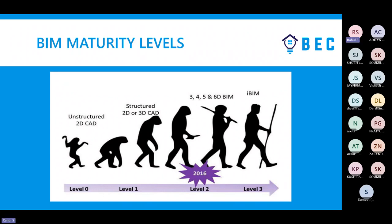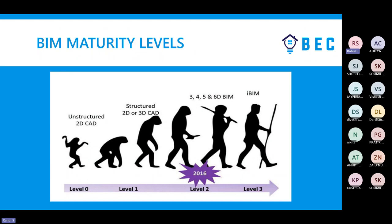Currently in the industry, most people are still using Level 2 — adoption is restricted to roughly 70% at that level. Level 3 is only seen in some projects where Open BIM standards have been adopted, such as ISO 19650, which aligns up to Level 2.